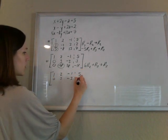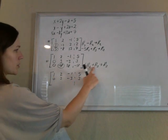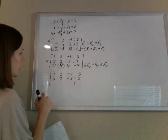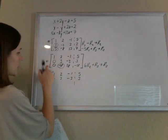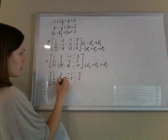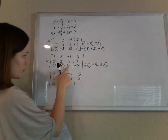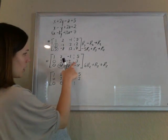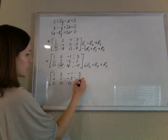So 0 plus 0 is 0. 18 minus 18 is 0. Negative 18 plus 18 is 0. 18 minus 18 is 0.